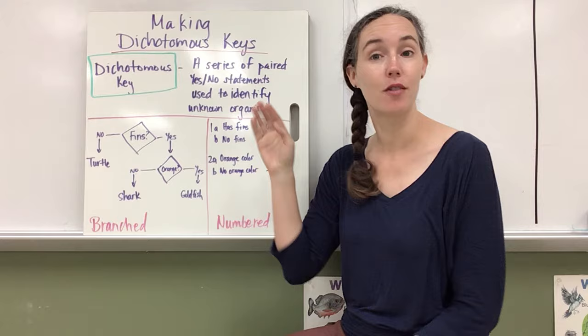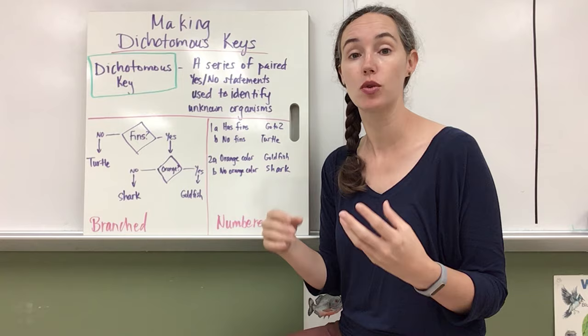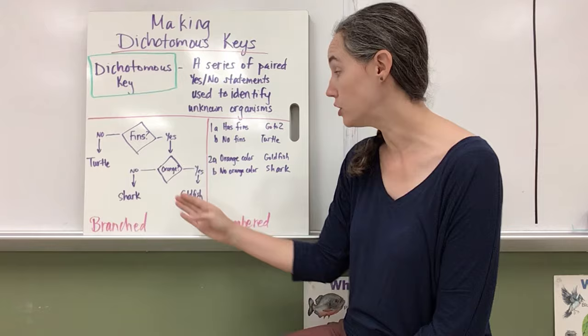A dichotomous key is a tool that scientists use to help them identify unknown organisms from a pool of known organisms. And they do this by answering a series of paired yes or no questions.